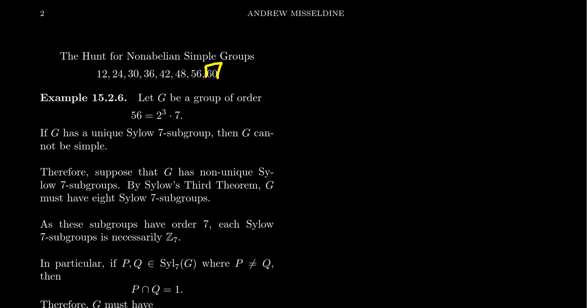In this video, we're going to take a look at the number 56 and show why there cannot be a simple group of order 56, and then try to make some generalizations from that if we can. So 56, the factorization here is significant. 56 factors as 2 cubed times 7, for which if there was a unique Sylow 7 subgroup, then that Sylow 7 subgroup would be normal and therefore the group would not be simple.